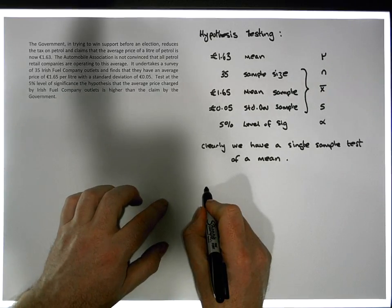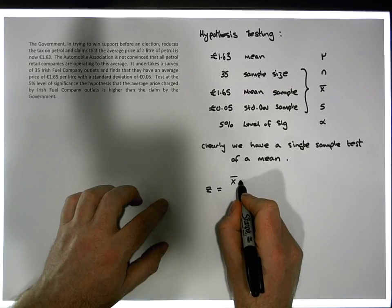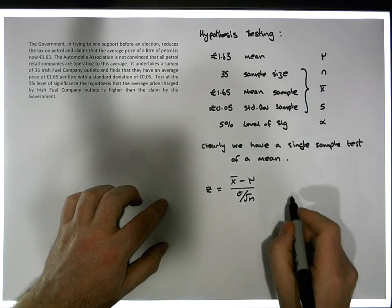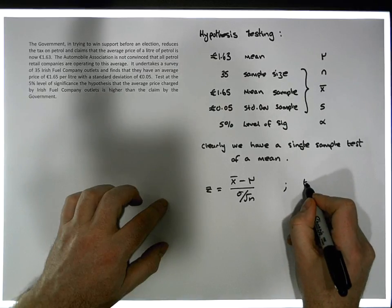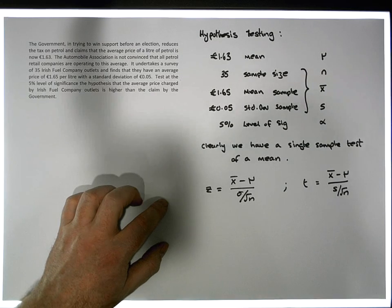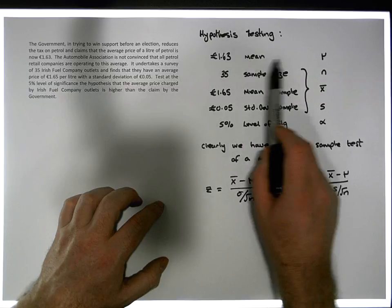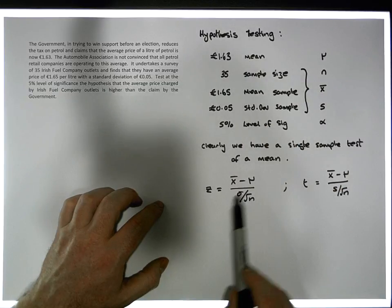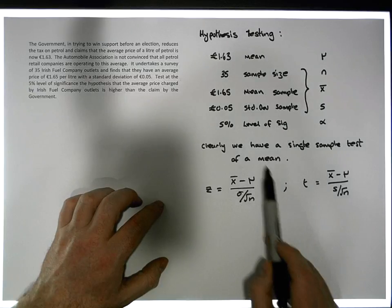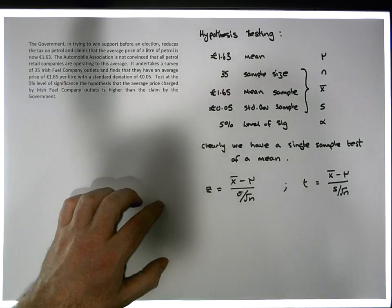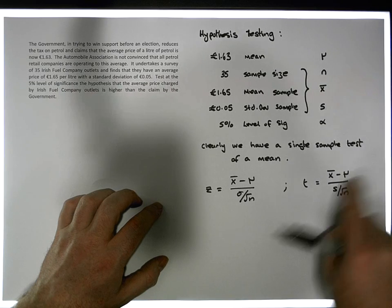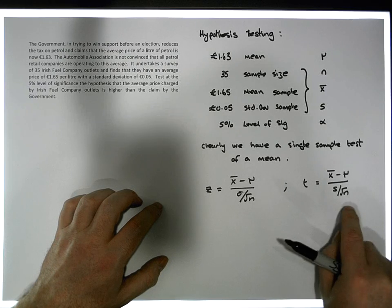The first is the Z statistic: z = (x̄ − μ) / (σ / √n), where σ is the population standard deviation. The other alternative is the T statistic: t = (x̄ − μ) / (s / √n), where s is the sample standard deviation. In this scenario we have not been given any information about the population standard deviation σ, so we cannot run a Z test. We've only been given the sample standard deviation, so the more appropriate test statistic is the T statistic. It requires four values — x̄, μ, s, and n — and we have all of them.